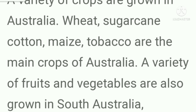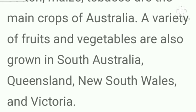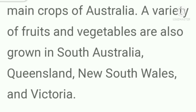Question number five: What are the main crops in Australia? Answer: A variety of crops are grown in Australia. A variety of fruits and vegetables are also grown in South Australia, Queensland, New South Wales, and Victoria.